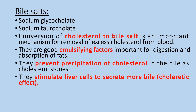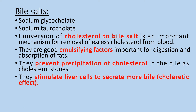From these bile acids, we can also get bile salts: sodium glycocholate and sodium taurocholate. The conversion of cholesterol to bile salts is a very important mechanism for the removal of excess cholesterol from the blood. They act as good emulsifying factors, important for digestion and absorption of fats, and they also prevent the precipitation of cholesterol in the bile as cholesterol stones. These bile salts also stimulate liver cells to secrete more bile — the choleretic effect.